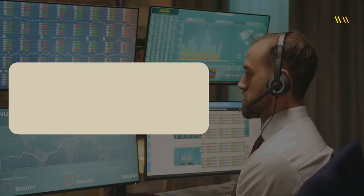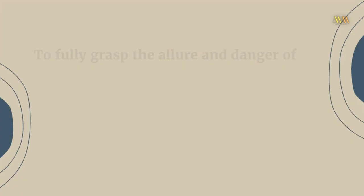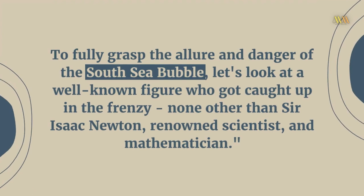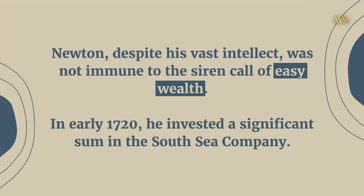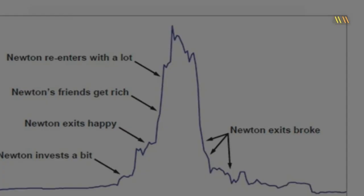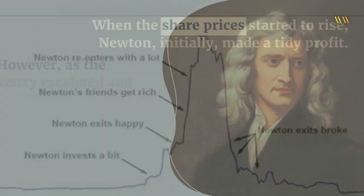This was precisely the fate that befell the South Sea Company and its shareholders. To fully grasp the allure and danger of the South Sea Bubble, let's look at a well-known figure who got caught up in the frenzy — none other than Sir Isaac Newton, renowned scientist and mathematician. Newton, despite his vast intellect, was not immune to the siren call of easy wealth. In early 1720, he invested a significant sum in the South Sea Company. When the share prices started to rise, Newton initially made a tidy profit.